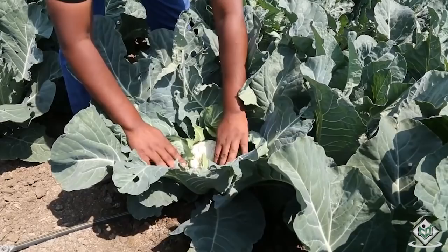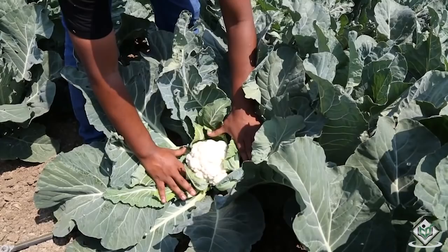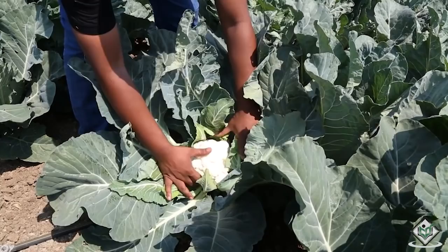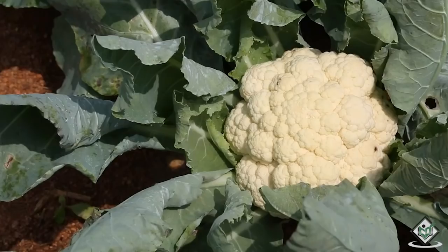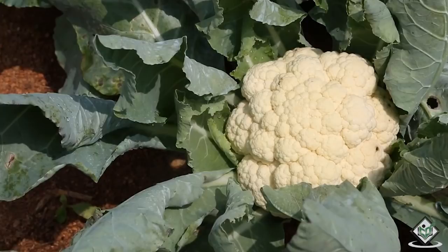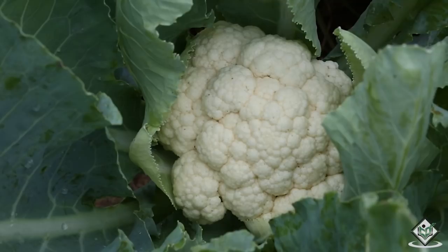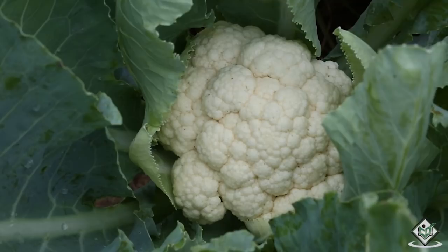Inspection of the whole field is done every second or third day. Harvesting during morning or evening so that the produce may be kept cool for the market is considered the best practice. The average yield of cauliflower for early crop is 200 to 250 quintals per hectare, while for the late crop it is 250 to 300 quintals per hectare. Thank you for watching our tutorial on the cultivation process of cauliflower crop. Stay connected with tutorialspoint.com to watch our next tutorials on the cultivation processes of different crops.